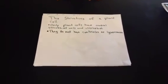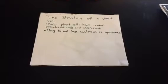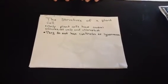The structure of a plant cell, unlike the animal cell, has a vacuole, cell wall, and chloroplast.